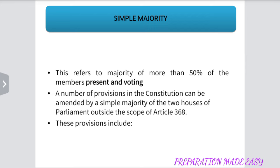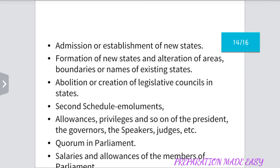Now let us see the simple majority. This refers to the majority of more than 50% of the members present and voting. A number of provisions in the Constitution can be amended by the simple majority of the two Houses. These provisions include: Admission or establishment of new States; Formation of new States; Alteration of areas, boundaries or names of existing States; and Abolition or creation of Legislative Council in the States.